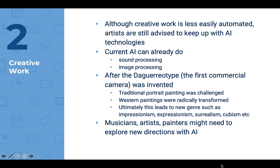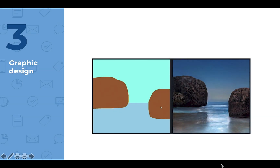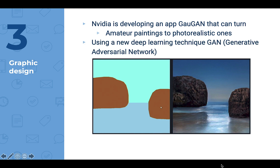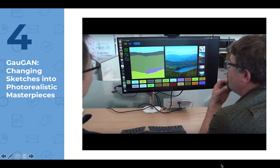Musicians, artists, and painters manage to explore new directions with AI. A media company is developing an app called GauGAN, named after the French painter Gauguin, which can turn amateur paintings like the picture on the left into photorealistic ones like the one on the right. It uses a new deep learning technique called GAN — Generative Adversarial Network. This video illustrates how to change sketches into photorealistic masterpieces; the link has already been uploaded to Moodle.